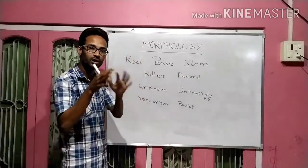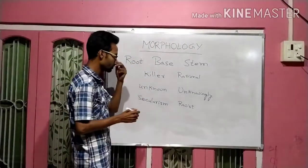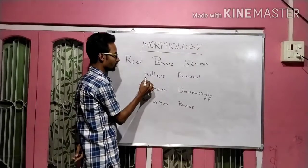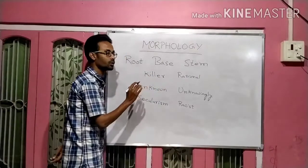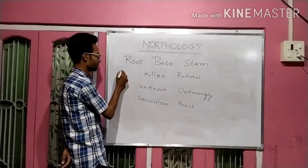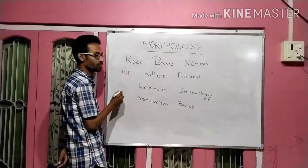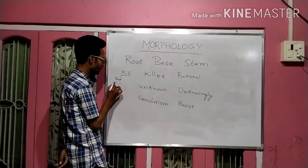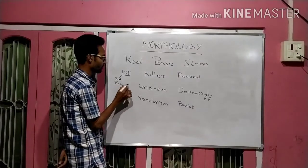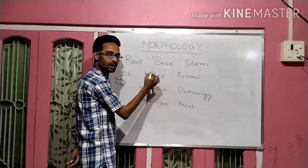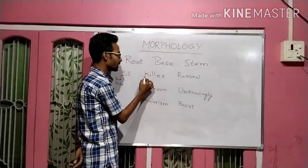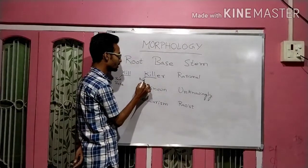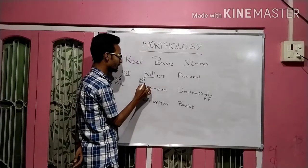Let me come to this in a clear way. For example, we have the word 'kill.' Here, kill is the root. It is also the base. When we transform it to 'killer,' here also kill is the root and kill is the base.